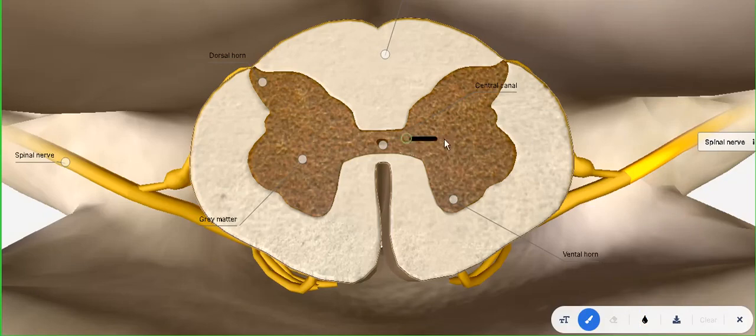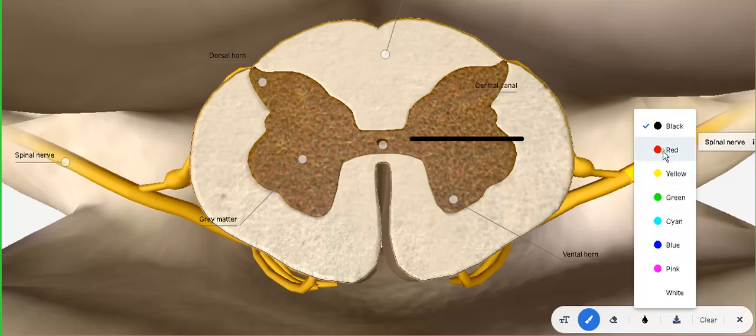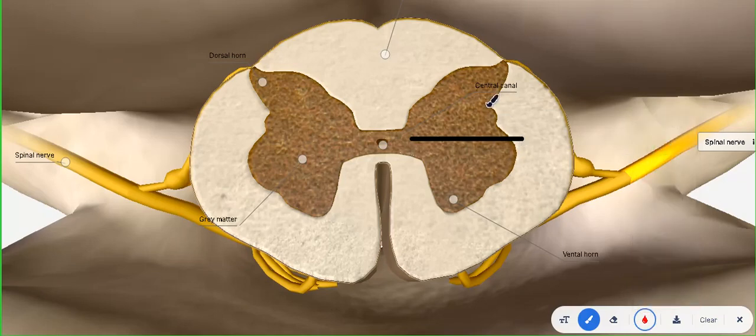Here again you have the dorsal horn and the ventral horn. Here is your lateral horn, this small bulge on the side. And here we have the central canal right here in the center. The question, as I said, they ask is tabulate or enlist the nuclei present within the grey matter.